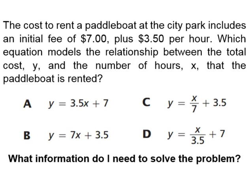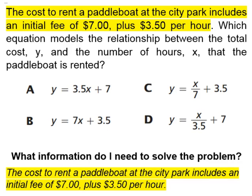Let's find out what information we need in order to solve the problem. One thing we need is to know the amount it costs for the initial fee to rent the paddle boat, and that's $7. Also we need to know how much we're charged per hour to rent it, and that is $3.50. So the initial fee is $7 plus $3.50 per hour to rent the paddle boat.